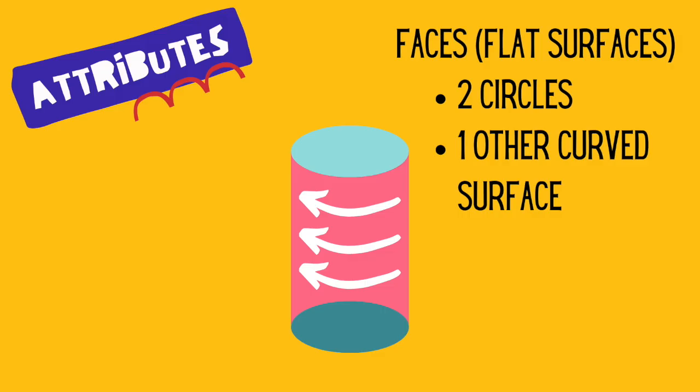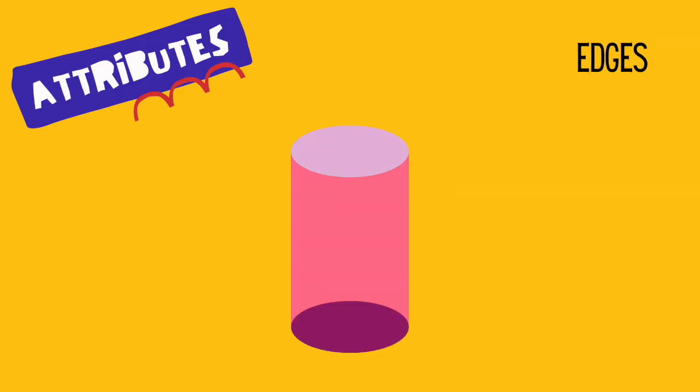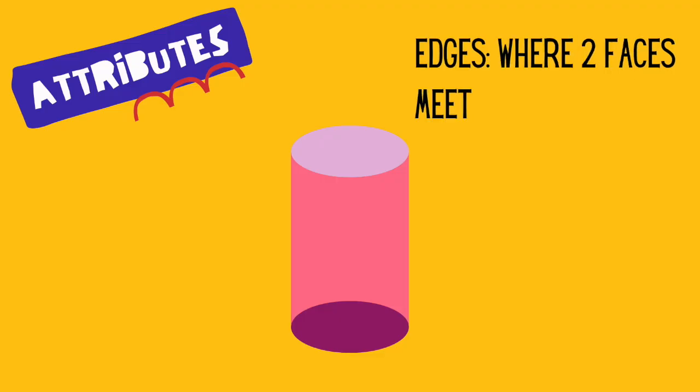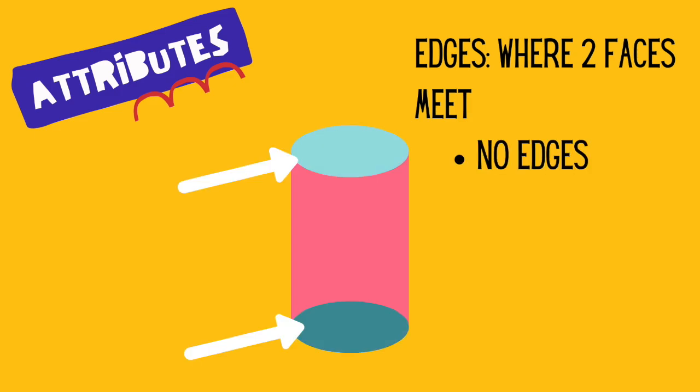Now let's talk about edges. Remember, an edge is where two faces meet. Cylinders have two faces, but they never meet. So that means cylinders have no edges.